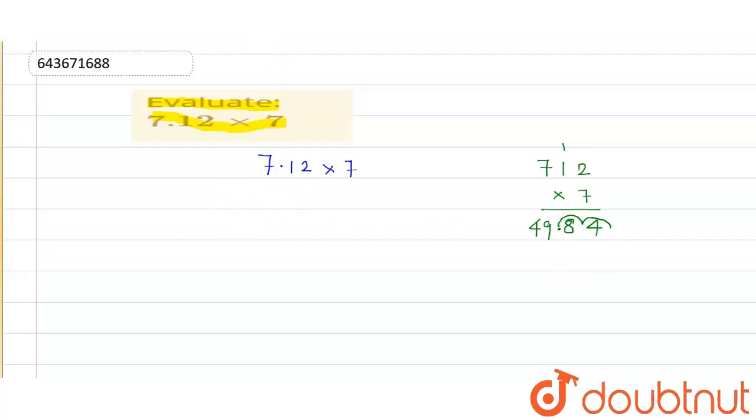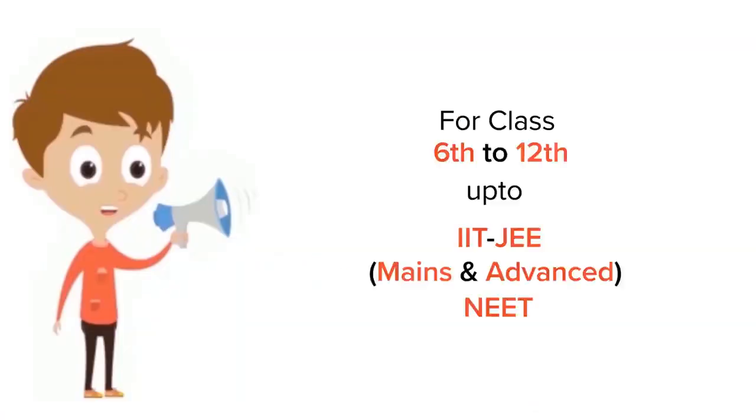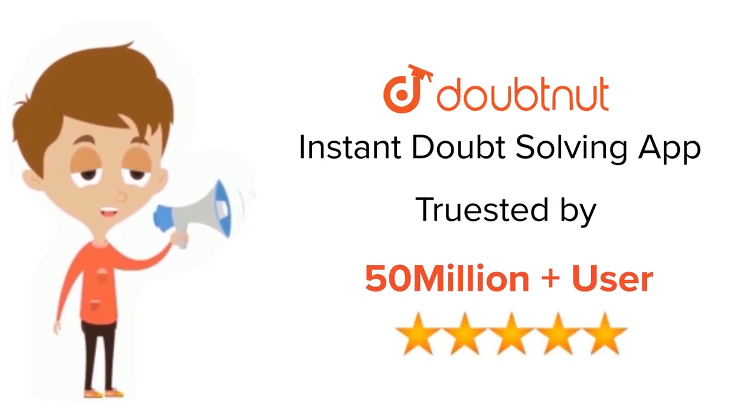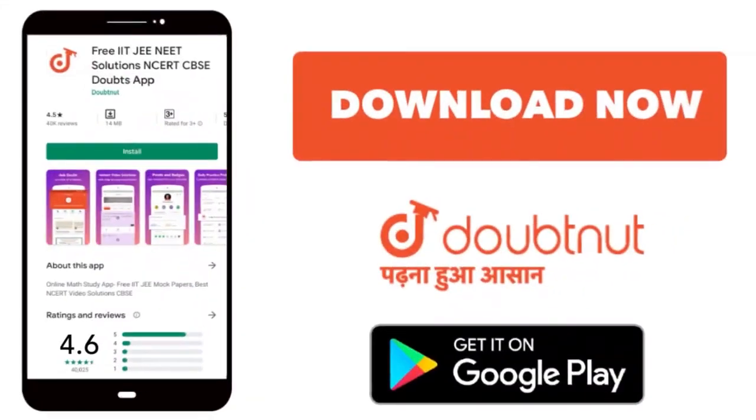So our final answer, that is 7.12 multiply by 7, is equals to 49.84. Thank you. For class 6 to 12, IIT-JEE and NEET level, trusted by more than 5 crore students, download Doubtnut app today.